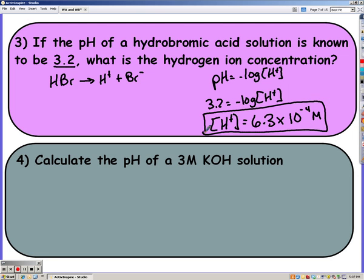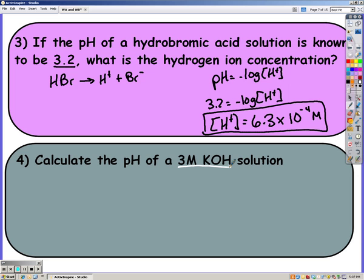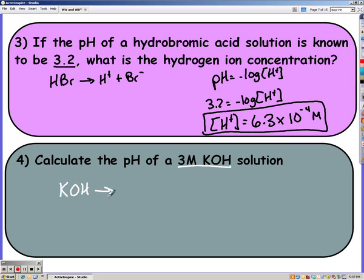Go ahead and pause the video and try to write your dissociation equation for number four. For number four, you need to realize that you had a base because KOH is not an acid. And so when bases break up, we're going to have our positive ion, which in this case is potassium, and we're going to have hydroxide. It's a strong base, so the same concept applies. I have three molarity of KOH, so I also have three potassium ions and three hydroxide ions or molarity.